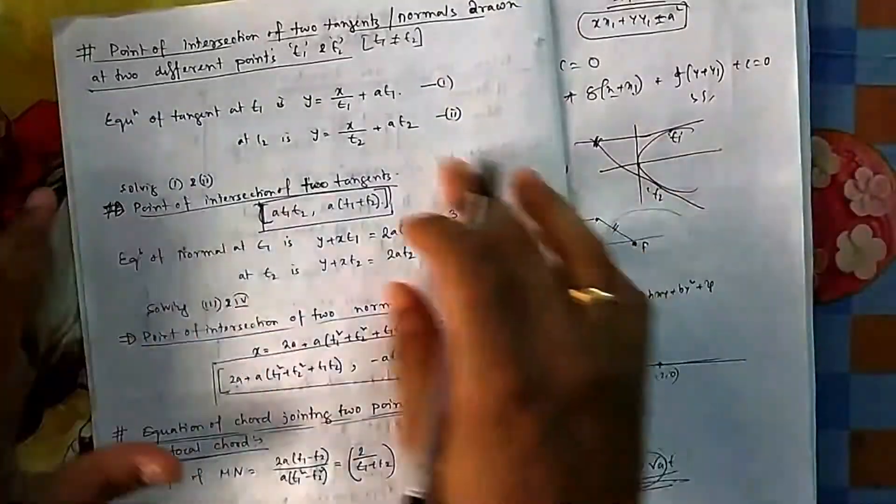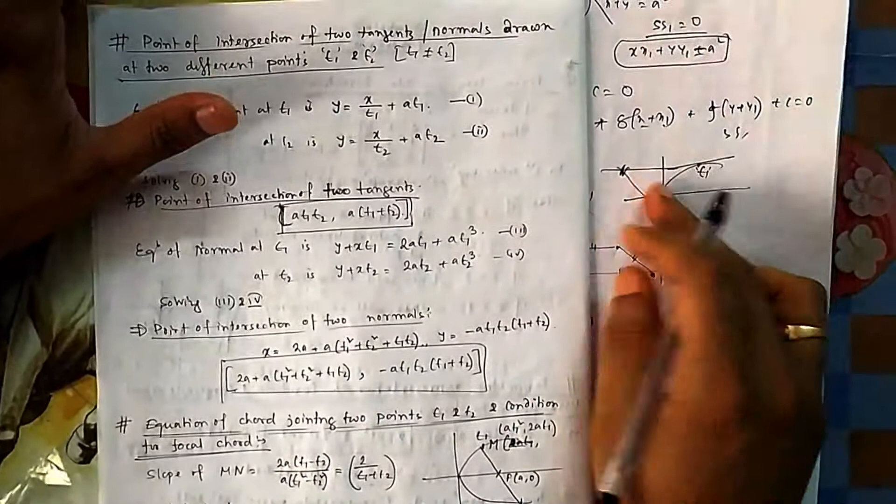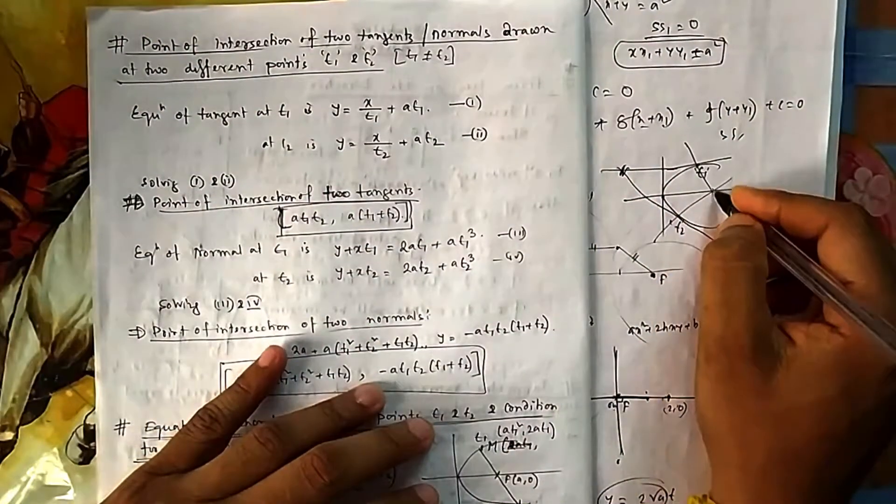So we need to find the intersection of these two tangents and also intersection of the two normals.